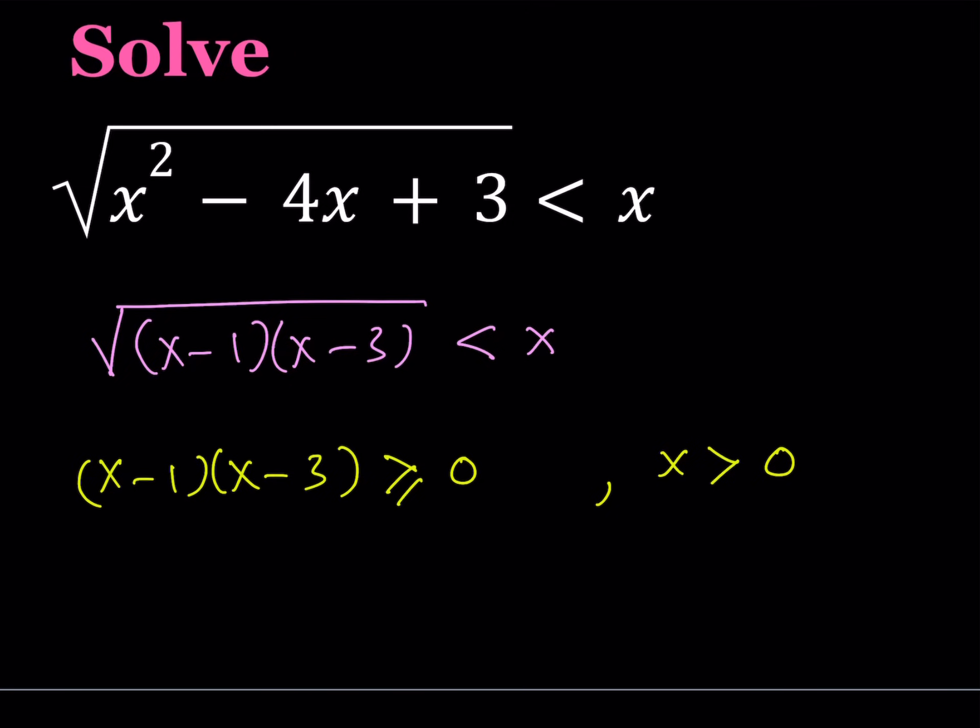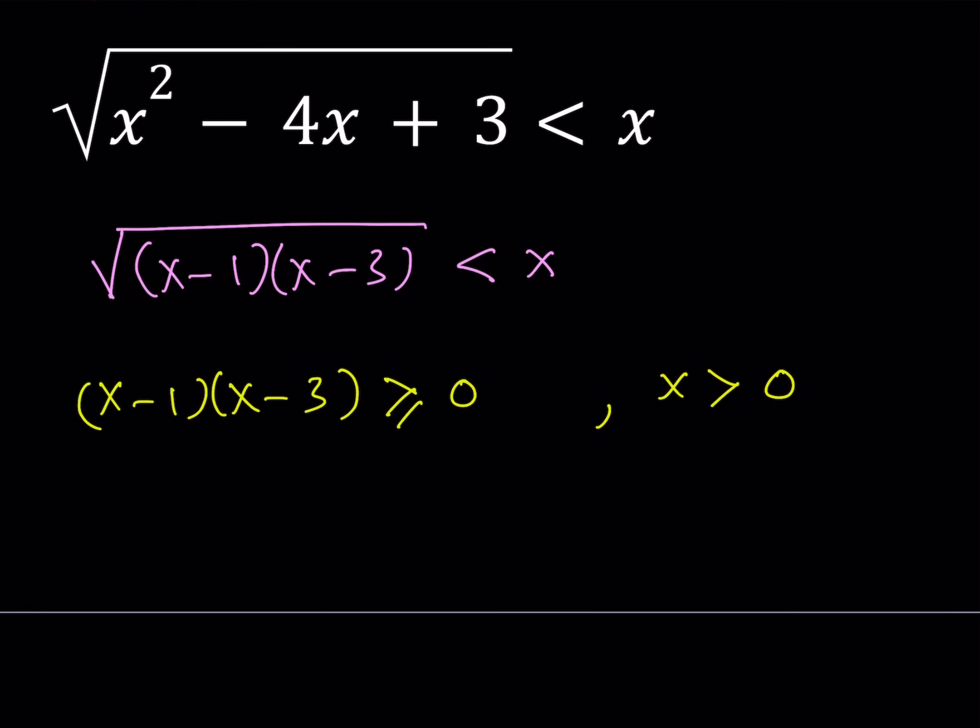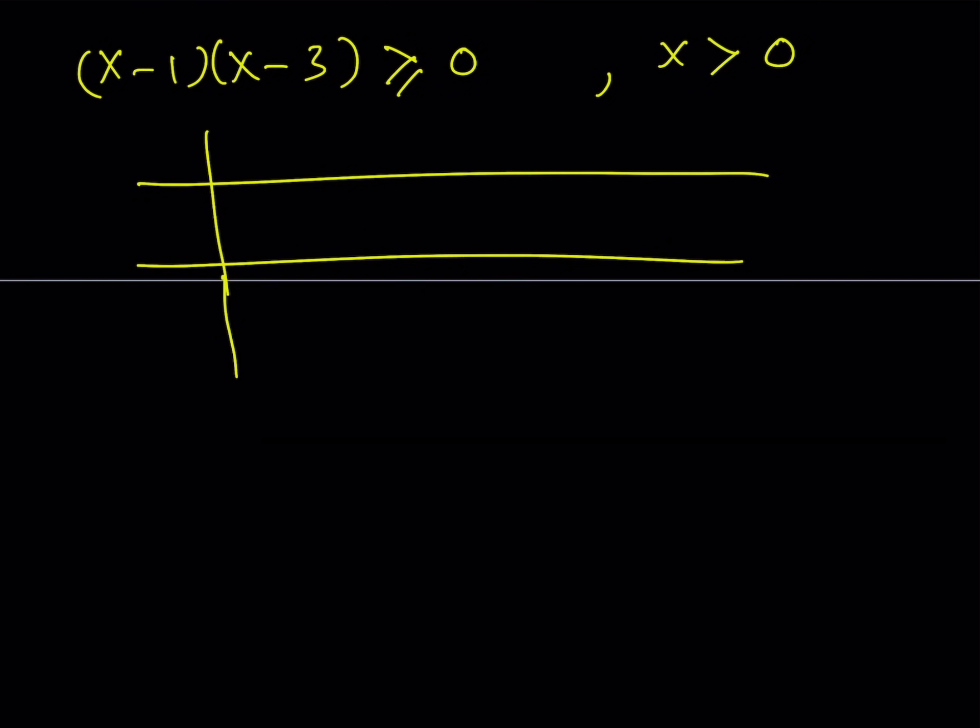Alright, so to solve this, we can put all this together in one table. I'm going to be using 0 as a root, 1 and 3. This is going to be my first expression, which is x minus 1 times x minus 3. And this is going to be the x. Now, I do have two roots here and one root here.